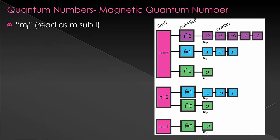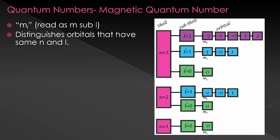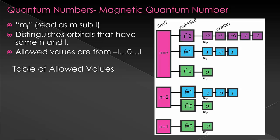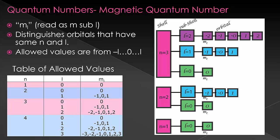M sub L is the magnetic quantum number. This distinguishes orbitals that have the same N and L but have different orientations. For example, we discussed that there are three P orbitals — this comes out of the allowed possibilities for M sub L: negative one, zero, and one. M sub L is allowed to be anything from negative L up through L, each being integers. So if L is equal to one, we would have a P orbital, and M sub L would be allowed to equal negative one, zero, and one. Since there are three allowed values, there are three P orbitals for each energy level.